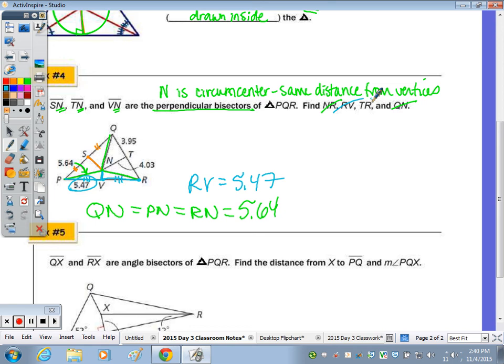And last, TR, this side here, this is a perpendicular bisector so it splits this into two congruent segments. So TQ is the same as TR. So therefore, TR is 3.95.